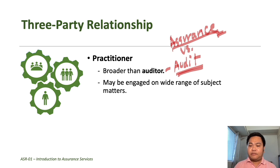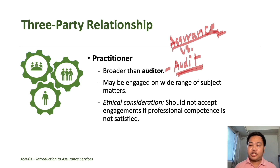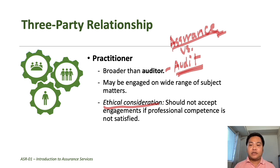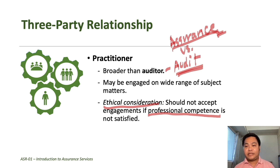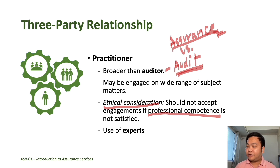Because practitioners may be asked to perform engagements requiring specialized knowledge or skill, the practitioner should not accept an engagement if preliminary knowledge about the engagement circumstances indicates that the ethical requirement regarding professional competence will not be satisfied. If you are asked to perform an assurance service on a subject matter totally unrelated to your skill or knowledge, you must satisfy the ethical requirement of professional competence first. In some cases, this requirement can be satisfied by the practitioner using the work of persons from other disciplines, referred to as experts.